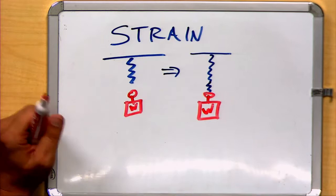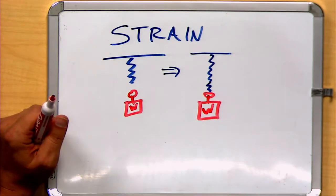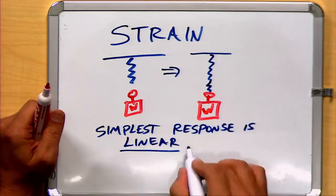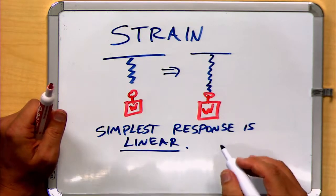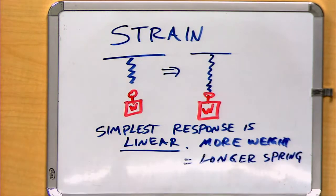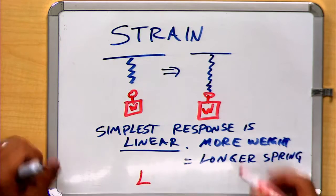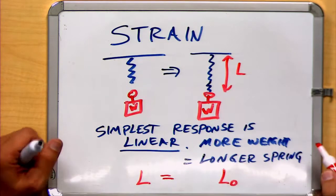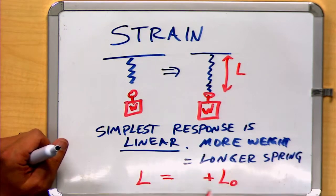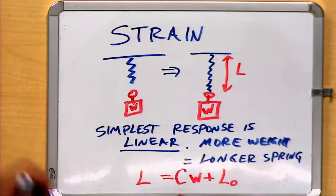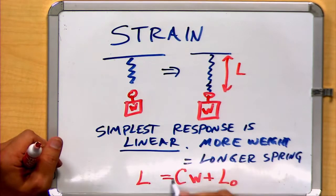The simplest way to describe a spring's response, and the response of most springs, is a linear response. This means that the more weight applied, the longer the spring. Let's consider an equation for that. The length of the spring might be equal to the original length of the spring plus the weight that's added times some constant value. Notice when there's zero weight added, this term would go away, and we would get L-naught, which is the original length of the spring.